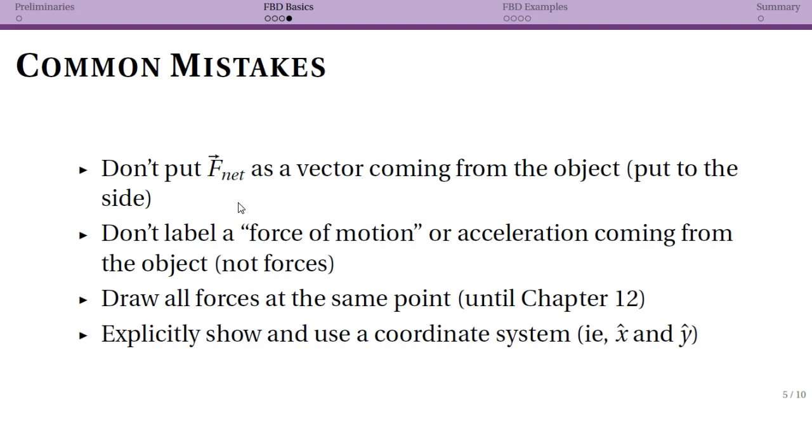The first mistake: basically I'm telling you here what to do, not what not to do. So don't put F_net as a vector coming from the object itself. Putting it to the side is what you should be doing—do this. On the past slide you saw that I drew F_net but I drew it off to the side. It was clearly not one of the forces that was just acting directly on the object. Please, please, please be careful about this, especially if you're gonna label F_net as up F sub n. I sometimes just don't know if you think that that's another force or not.